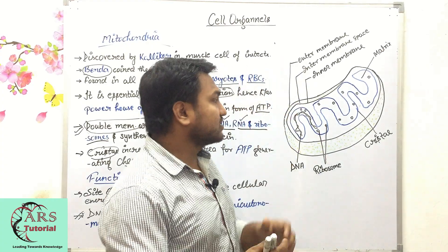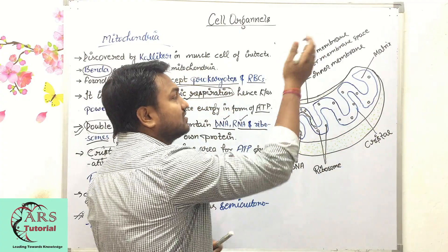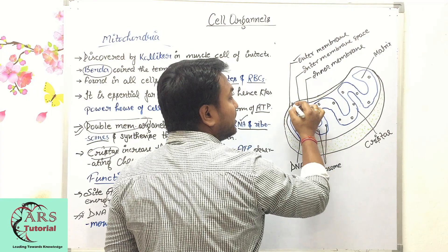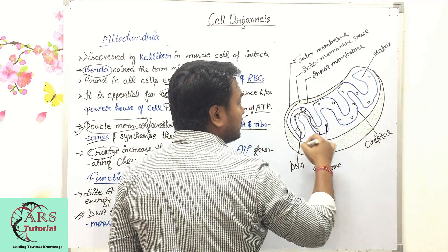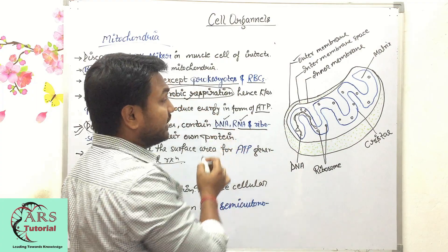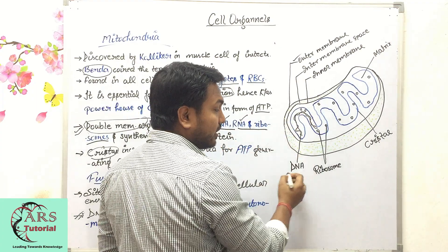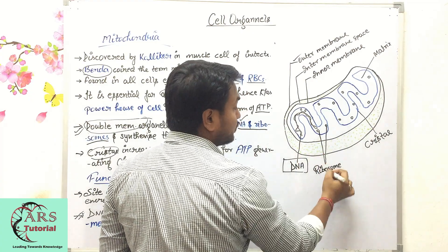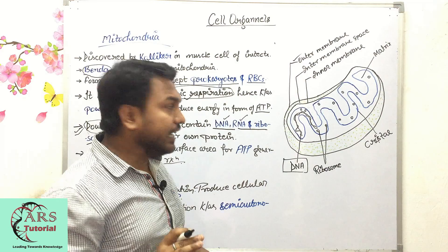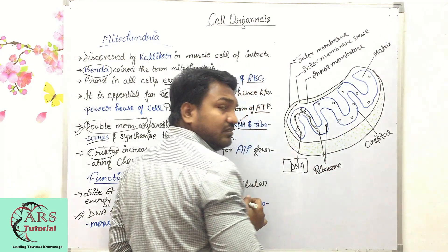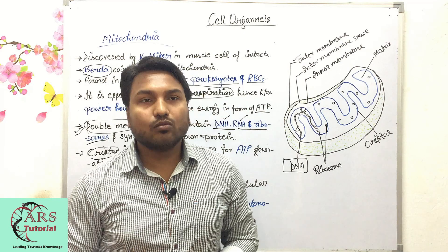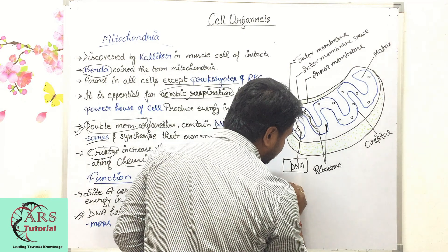Now let's look at the structure of mitochondria. As mentioned, mitochondria is a double membrane organelle — it has an outer membrane and an inner membrane. Between these two membranes is a space filled with chemicals known as the inner membrane space. DNA molecules and ribosomes are also present inside. The foldings of the inner membrane are known as cristae, which help in ATP production. The point where two cristae meet and attach is called the cristae junction.